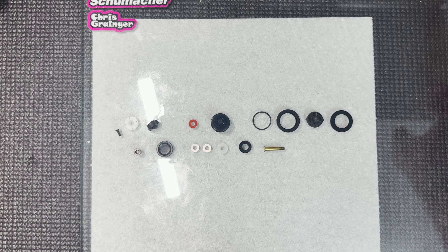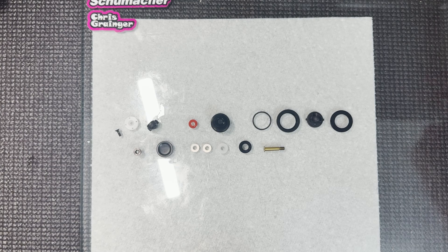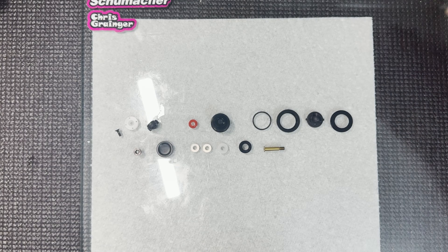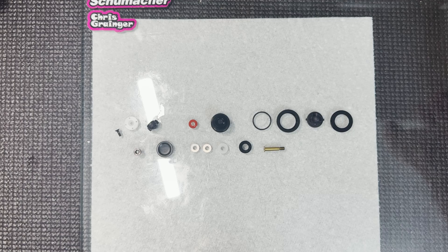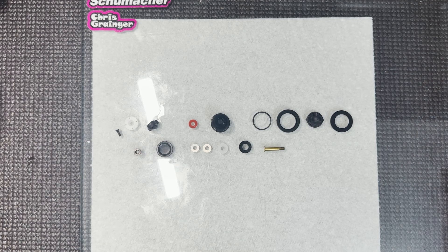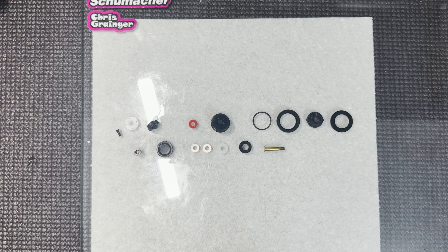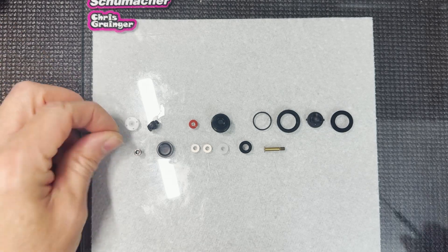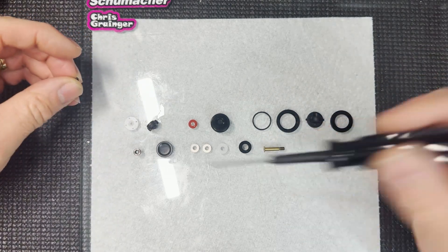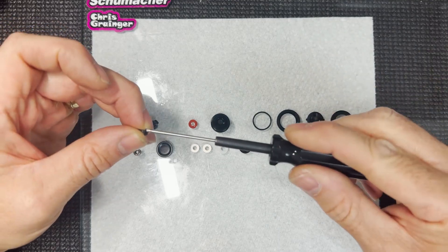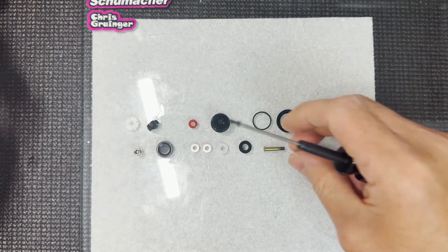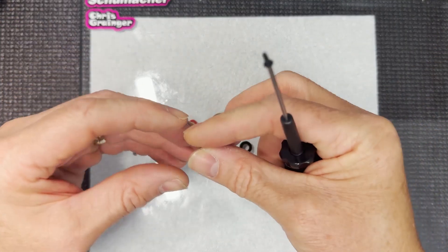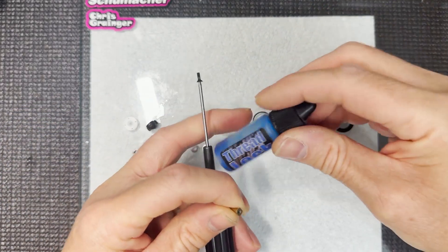Let's pop this together. I'm just going to do one because nobody wants to see me build four shocks. We'll get this one put together. We're going to start off by putting the piston on the shaft. We've got a gold nitride coated shaft as standard, and we're going to put a bit of thread lock on this screw.